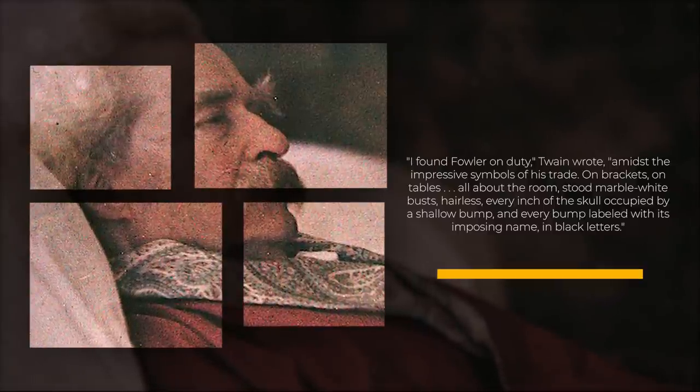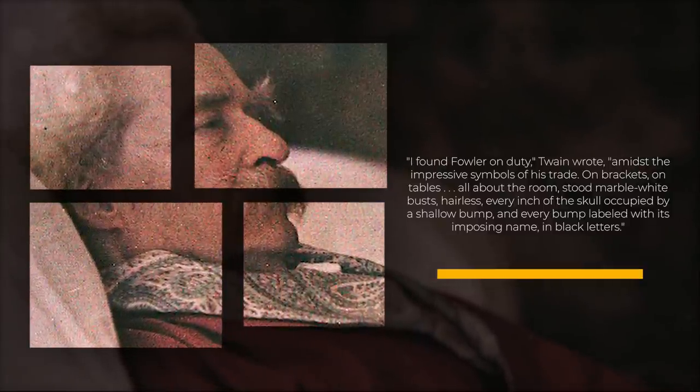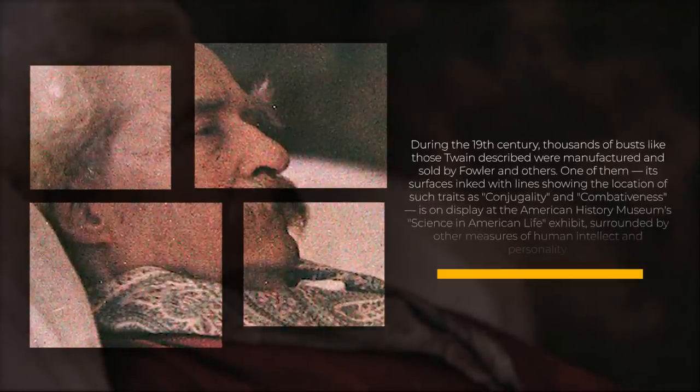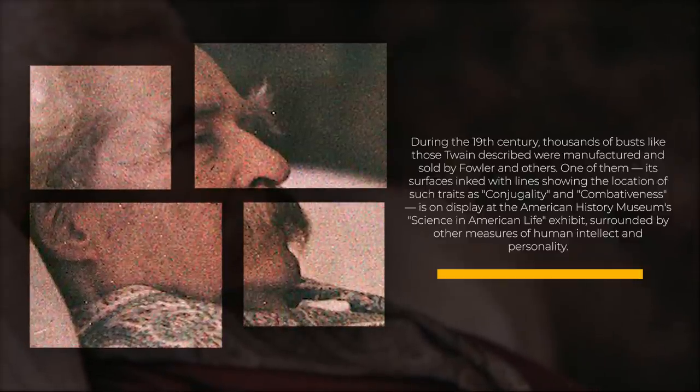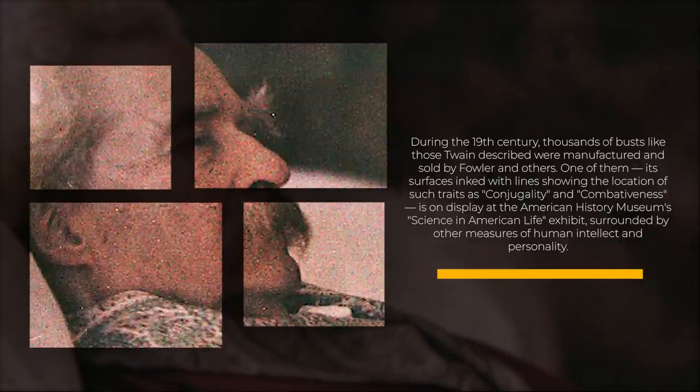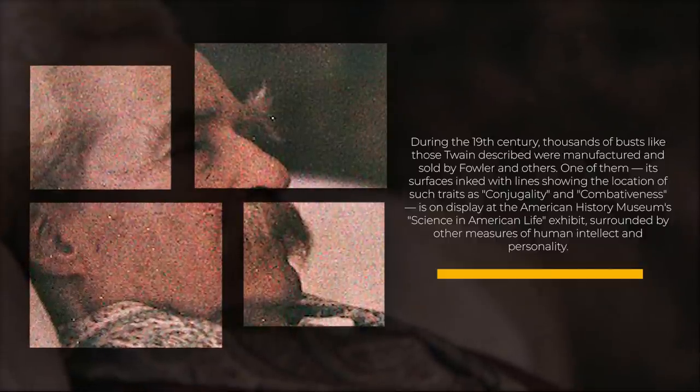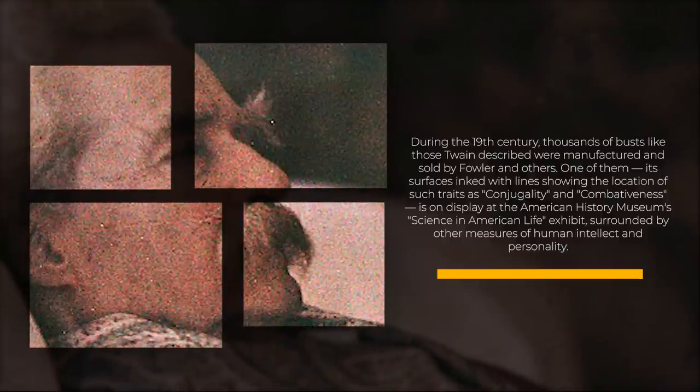Stood marble white busts, hairless, every inch of the skull occupied by a shallow bump and every bump labeled with its imposing name in black letters. During the 19th century, thousands of busts like those Twain described were manufactured and sold by Fowler and others. One of them, its surfaces inked with lines showing the location of such traits as conjugality and combativeness, is on display at the American History Museum Science in American Life exhibits, surrounded by other measures of human intellect and personality.